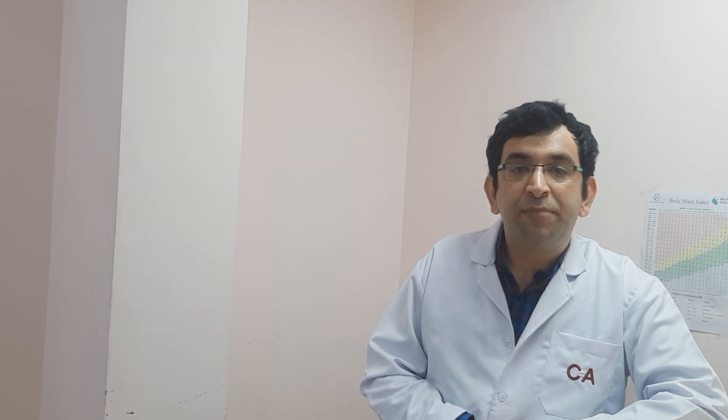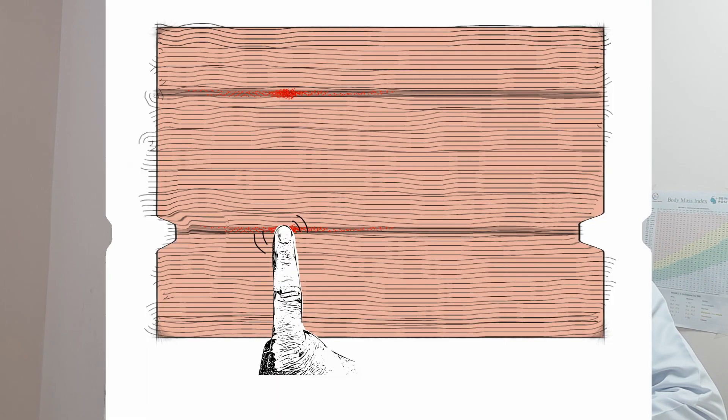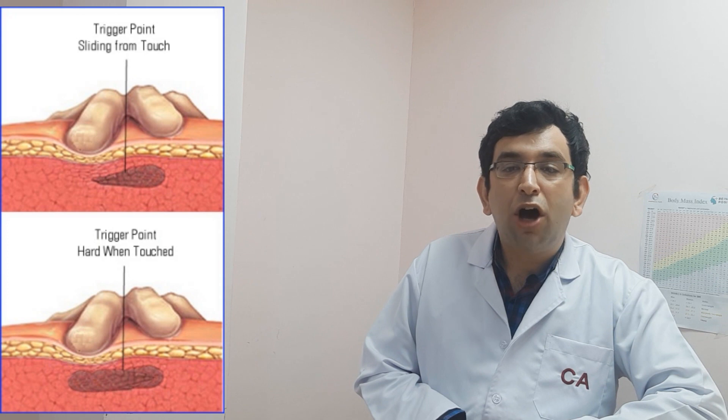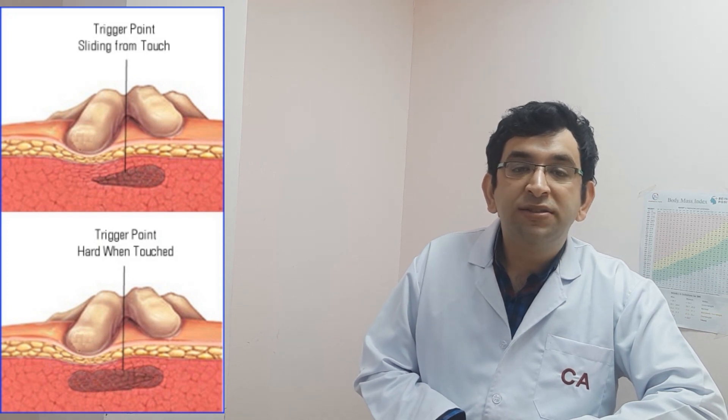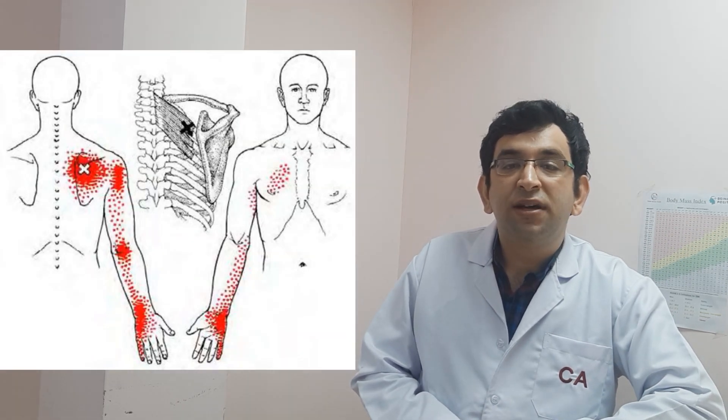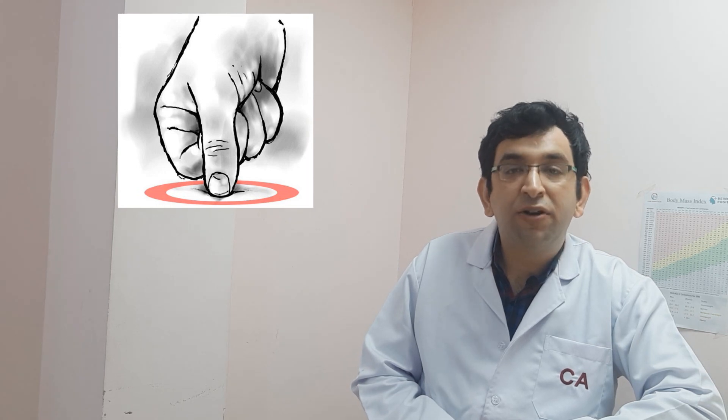Trigger points may also manifest as tension headaches or cervicogenic headaches, temporomandibular joint pain, decreased range of motion in the leg, and low back pain. Palpation of a hypersensitive bundle or muscle fiber of harder than normal consistency is the physical finding typically associated with a trigger point. Palpation of the trigger point can cause pain directly on the affected area and can cause radiation of pain towards a referral zone and a local twitch response.